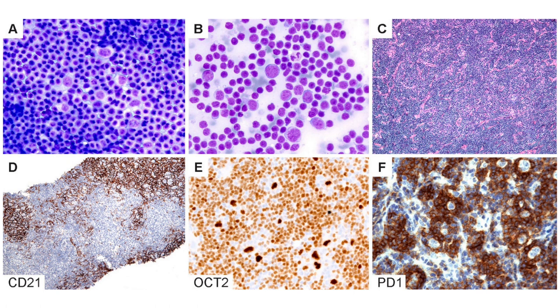For cytologic diagnosis of NLPHL, figures A and B show touch prep with LP cells in a background of small lymphoid cells and occasional inflammatory cells. Figure C shows an H&E stained core needle biopsy that does not readily reveal nodular architecture, but CD21 staining confirms the follicular dendritic cell meshwork and nodule presence. OCT2 with bright nuclear staining and PD-1 positive rosetting around LP cells further support the overall diagnosis of nodular lymphocyte predominant Hodgkin lymphoma.